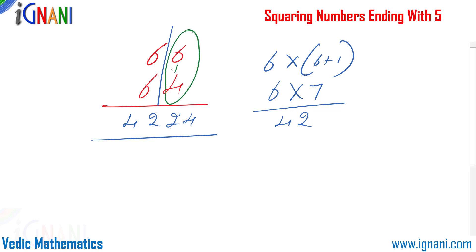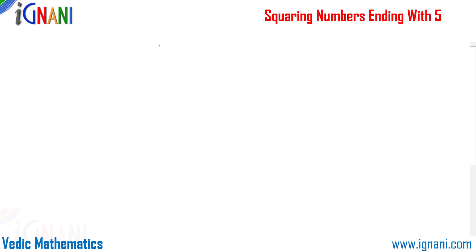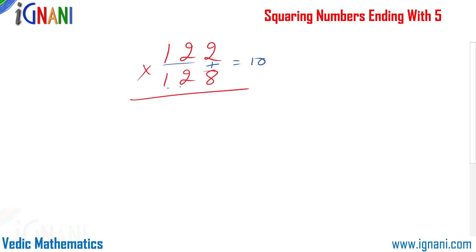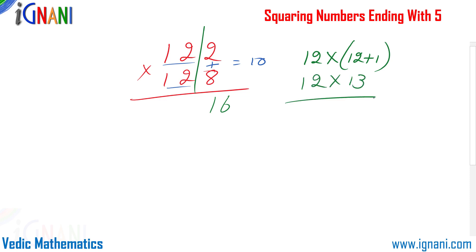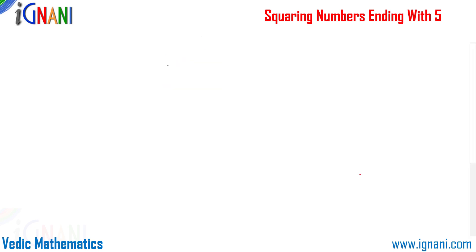The trick worked because 6 plus 4 equals 10 and the left-hand digits are the same. Now let's try with a three-digit number: 122 into 128. On the right, 2 plus 8 equals 10. On the left, 12 and 12 are the same. So 8 into 2 is 16, and 12 into 12 plus 1 is 12 into 13, which equals 156. The answer is 15616.